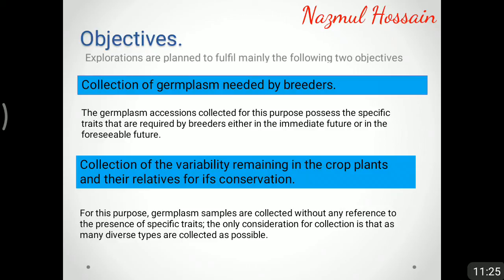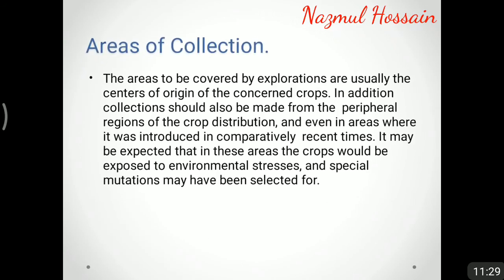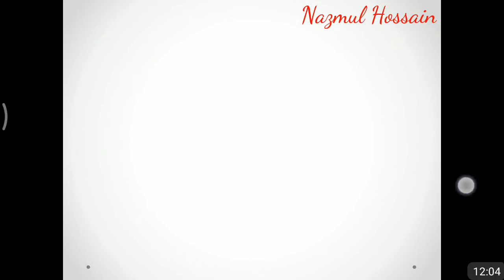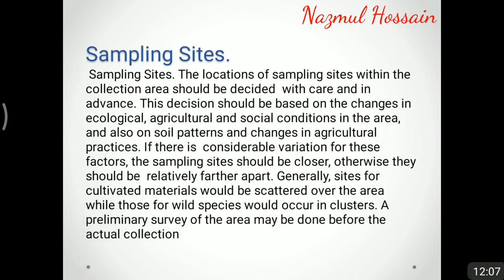For conservation purposes, germplasm samples are collected without any reference to the presence of specific traits; the only consideration is that as many diverse types are collected as possible. The area to be covered by exploration should ideally be the centers of origin of the concerned crops. In addition, collections should be made from peripheral regions of the crop distribution and even in areas where it was introduced in comparatively recent times, where crops may have been exposed to environmental stresses and special mutations. The location of sampling sites within the collection area should be decided with care based on changes in ecological, agricultural, and social conditions.